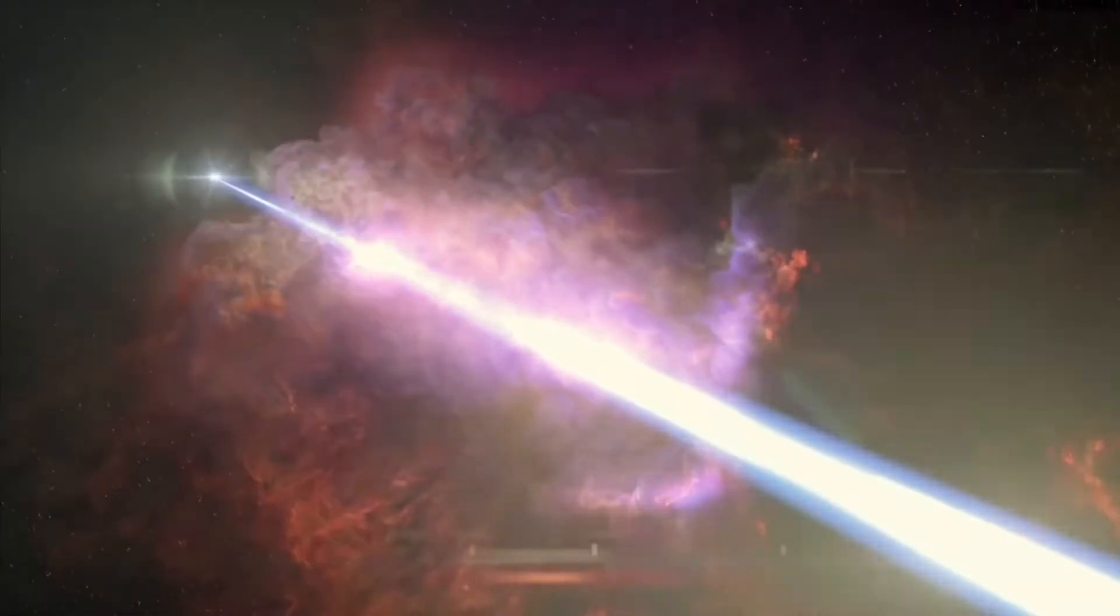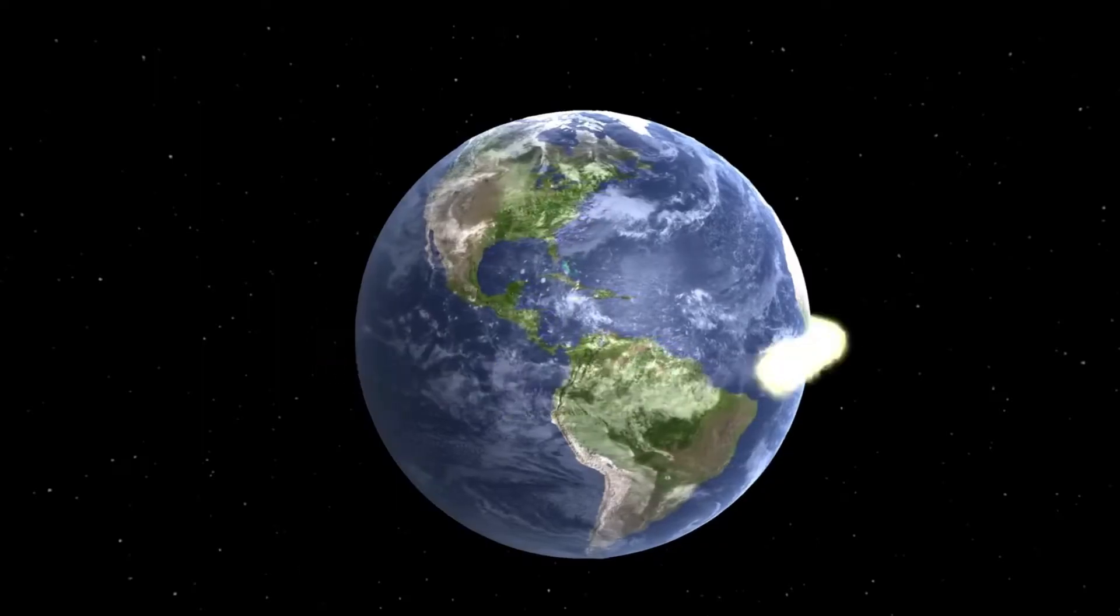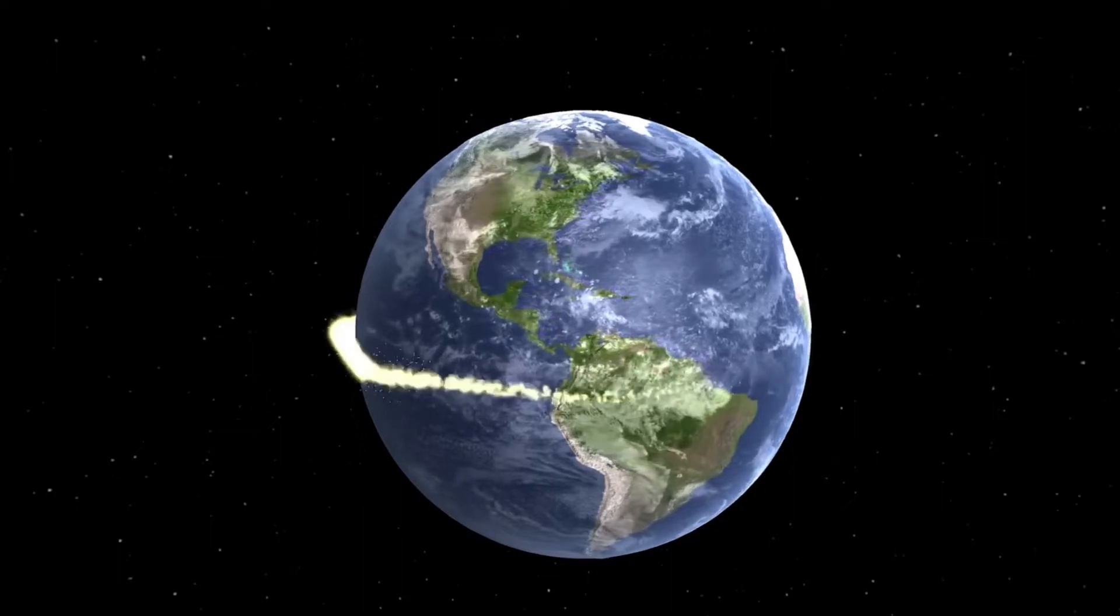Light travels the fastest in the universe at a speed of 300,000 kilometers per second. That allows light to travel around the world up to seven times in a second.